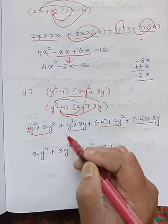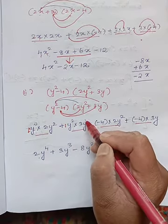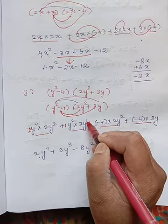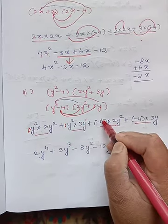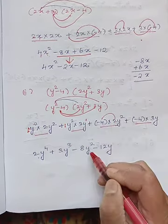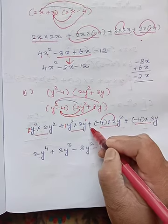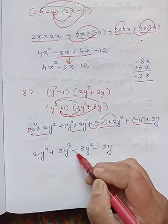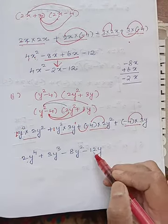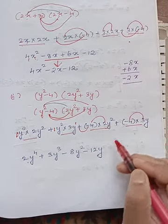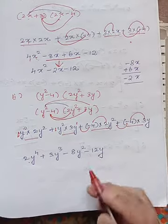Only 1 number there: 3. No number means 1, so 1 times 3 is 3. Power: 2 plus 1 is 3, so y to the power 3. Then 2 fours are 8, only 1 y square is there. Plus into minus is minus. Then 4 threes are 12, only 1y is there. Plus into minus is minus.